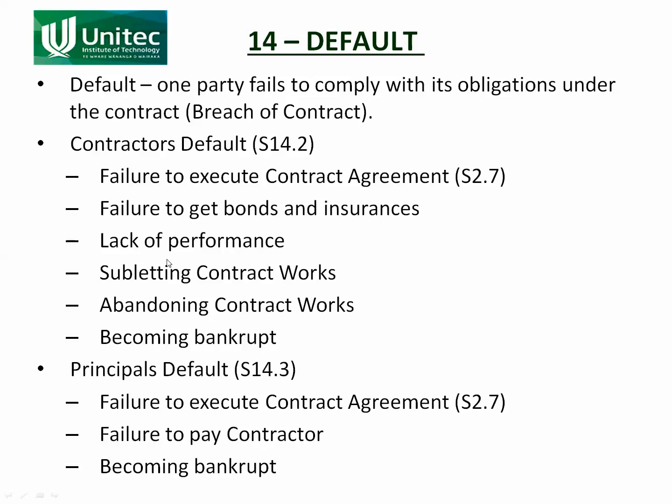The contractor might also sublet the contract works or abandon them, both of which are not allowed under the contract agreement, or he may become bankrupt and be unable to complete the works, in which case the contract would probably be discharged. The principal's main default is failure to pay the contractor, whether because he's being difficult about it or because he's bankrupt and simply can't pay.